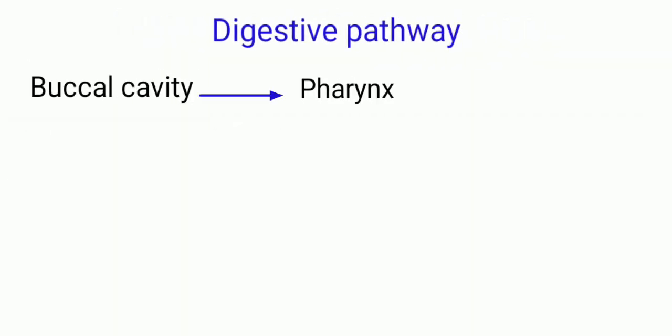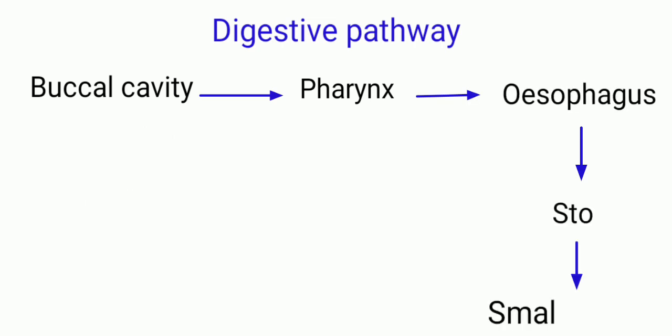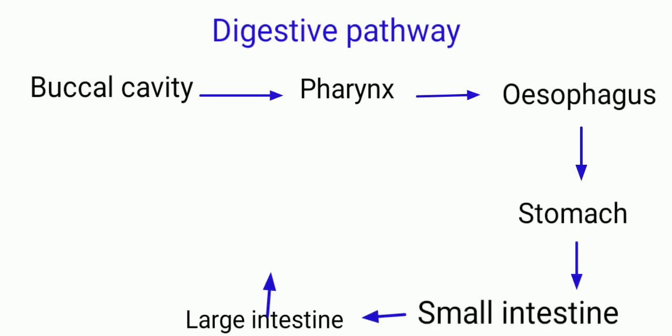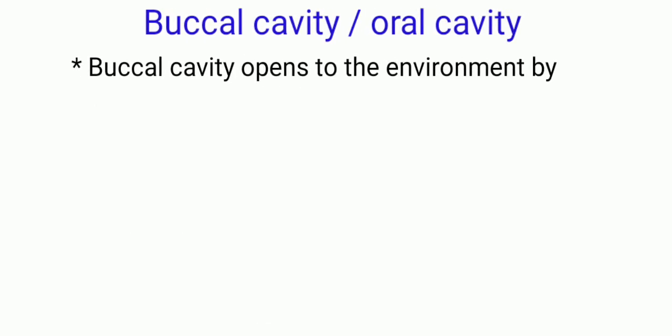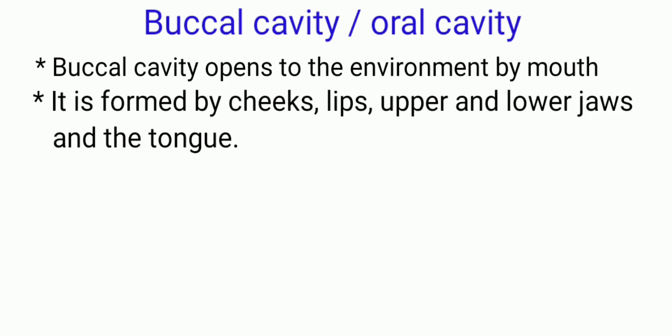The digestive pathway starts with the buccal cavity and ends with the anus. First, we study the structure of the buccal cavity and the digestion in the buccal cavity. The buccal cavity opens to the environment by the mouth. It is formed by cheeks, lips, upper and lower jaws, and the tongue. The upper jaw is fixed and the lower jaw is movable.